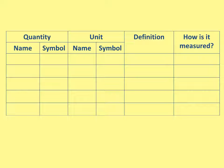We'll fill the table in as we go. To make it clearer: 'time' has the name 'time' and the symbol T, but the unit is 'second' and its symbol is S. So the symbol for the quantity and the symbol for its unit are different, and you need to be able to do the same with current, voltage, power, and resistance.